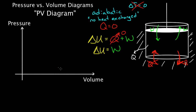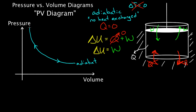On a PV diagram, an adiabatic process looks similar to an isothermal process but is steeper. An adiabatic expansion curves downward more steeply. These curves are called adiabats. An adiabatic compression would curve upward more steeply. Compared to an isothermal starting at the same point, the adiabatic does not reach as far down — it's noticeably steeper.